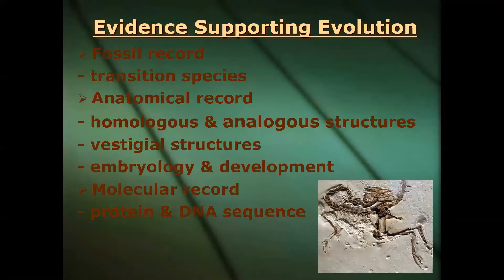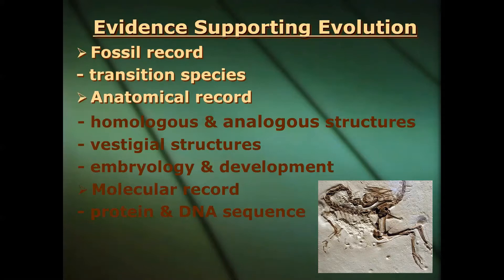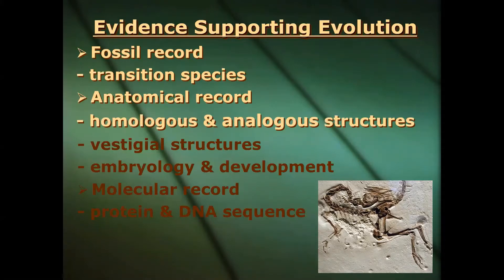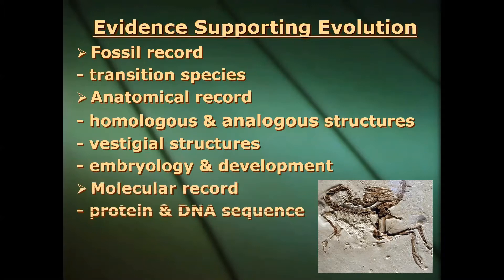So let's look at this evidence. We have the fossil record — lots of fossils that show life has been changing over time, including transitional species showing how new species possibly radiated from a common ancestor. We have the anatomical record, looking at morphology and comparing structures: homologous structures, analogous structures, vestigial structures, and embryology. And then the strongest evidence, something Darwin didn't even know about, is the molecular record — looking at protein and DNA sequences.